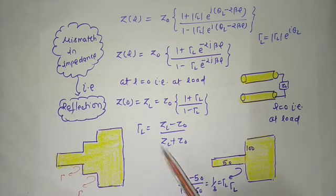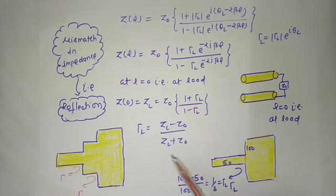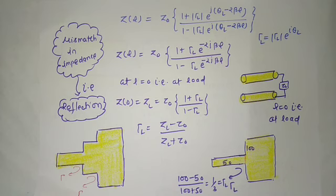So, the only thing to remember is: wherever there is impedance mismatching, reflection will occur. The formula to keep in mind is: Gamma_L = (ZL - Z0) / (ZL + Z0), and this is a complex quantity. In the next lecture, we will try to understand the concept of VSWR. If you found this lecture helpful, please like, subscribe, and comment. Thank you very much.